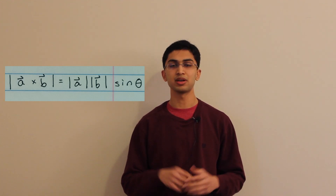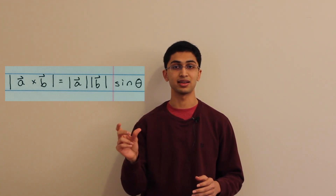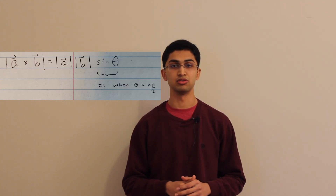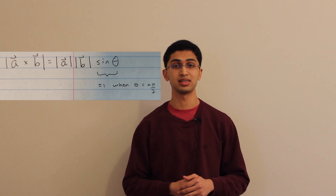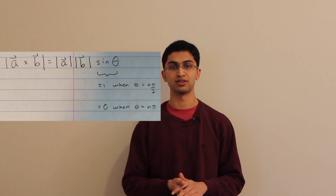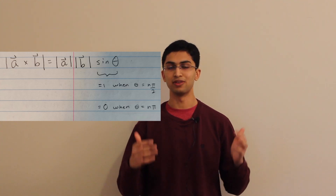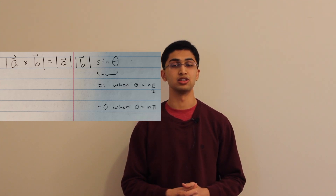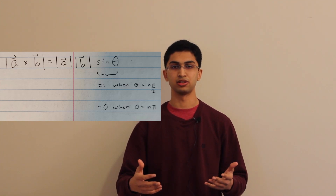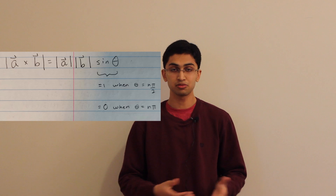Already we can tell something about the cross product just by looking at this formula, because it's proportional to sine of theta. Sine of theta equals 1 whenever the angle between the vectors is 90 degrees, and equals 0 whenever the two vectors are parallel. So the cross product is 0 if the two vectors are parallel, and maximum if they are perpendicular. Just like the dot product is a measure of how parallel two vectors are, the cross product is a measure of how perpendicular two vectors are.